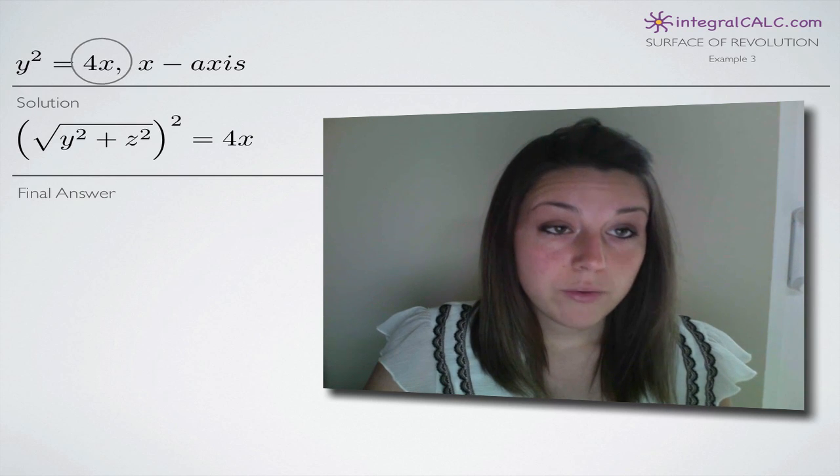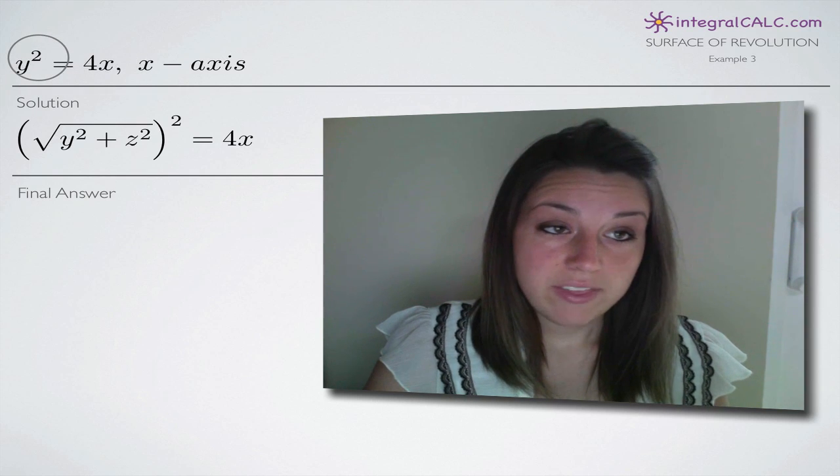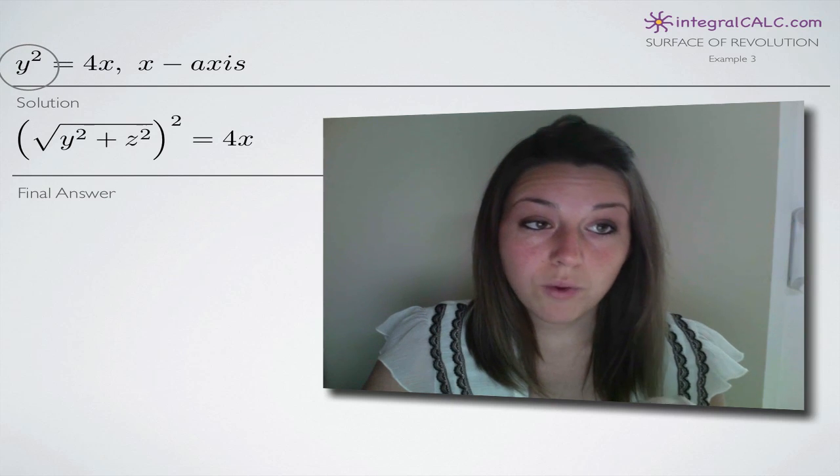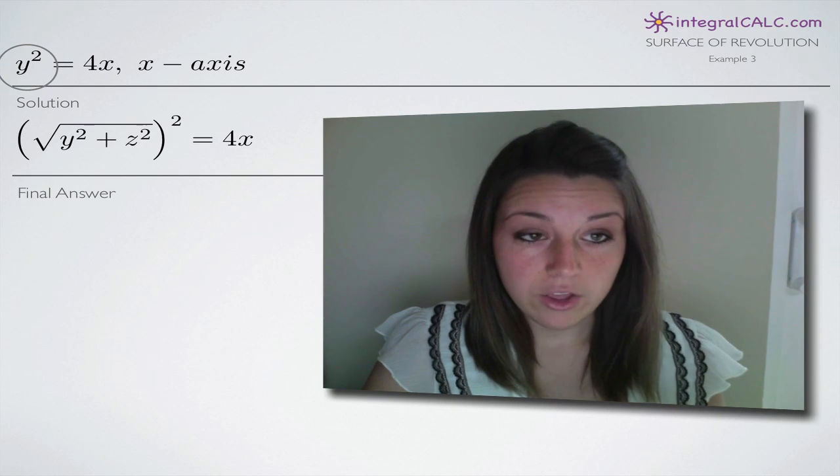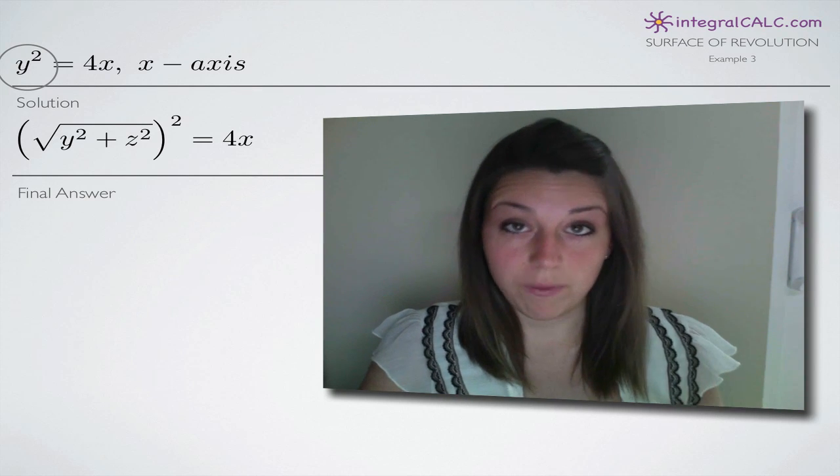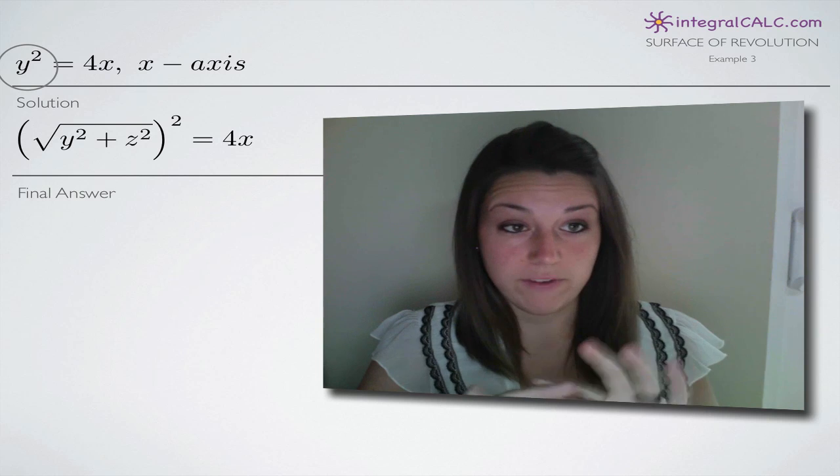So remember that we're ignoring x and we're ignoring everything else in the problem. So all you have to work with is y, which means what we're going to do is replace y with y plus z. That's how we add in z to our problem so that we have all three variables at the end.